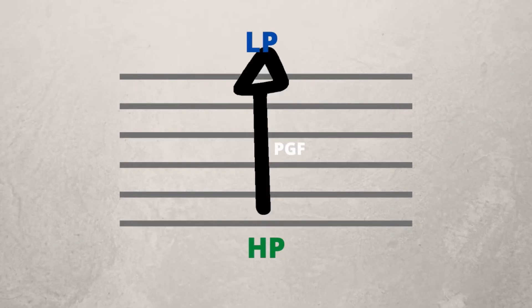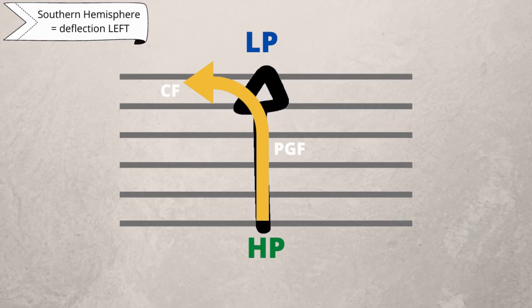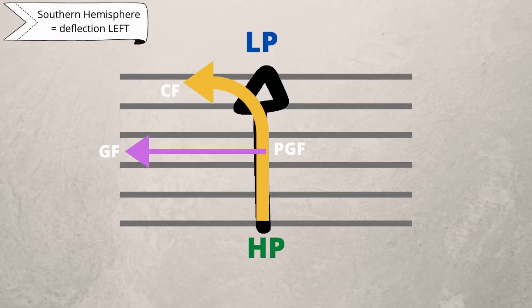If we look at all three of these concepts on one combined diagram, pressure gradient force means that air moves from a high pressure to a low pressure across the isobars. Because of earth's rotation, Coriolis force is going to cause the wind to be deflected. In the southern hemisphere, this wind will be deflected to the left. If Coriolis force and pressure gradient force are balanced, we will then get geostrophic flow and the air will move parallel to the isobars.